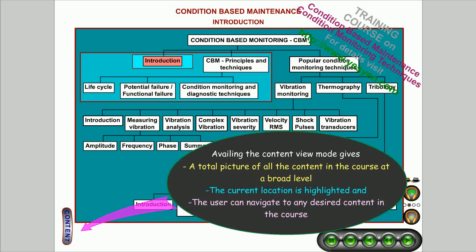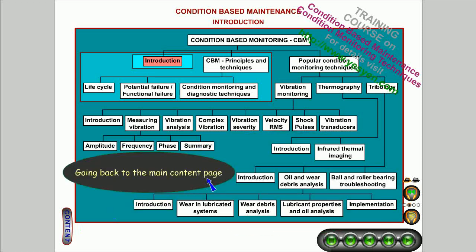Availing the content view mode gives a total picture of all the content in the course at a broad level. The current location is highlighted and the user can navigate to any desired content in the course. Going back to the main content page.